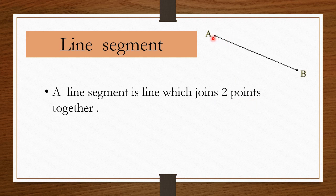You can see here, we have point A and we have a point B. We join these two points and we get this line segment AB.